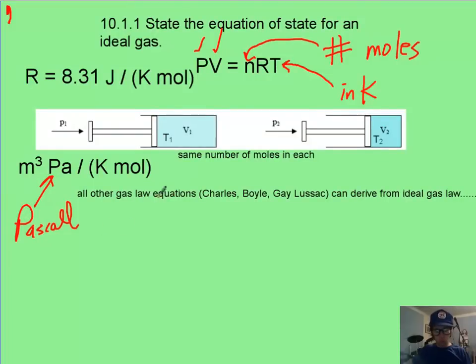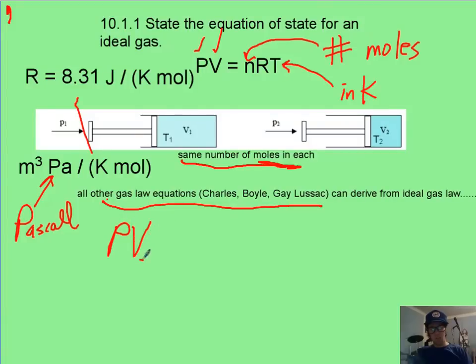Now, you should know that all the other gas laws, Charles, Boyle, Gay-Lussac, can be derived from this here. As long as you take as a given that the number of moles in your gas, let's say it goes through a compression, is not going to change. If that's the case, we can say that PV over T equals n times R. Just rearrange it.